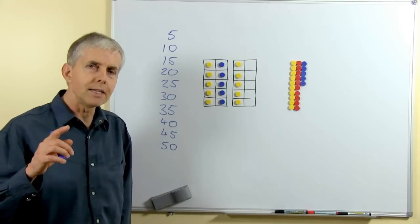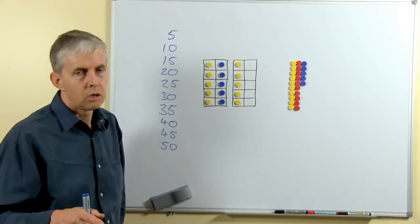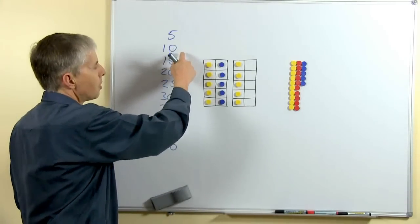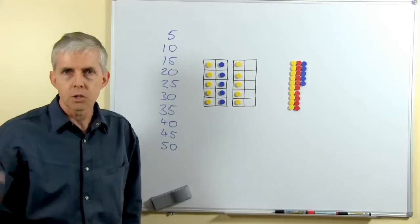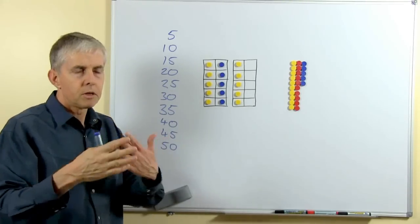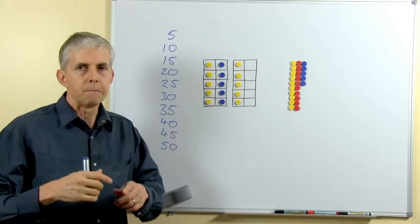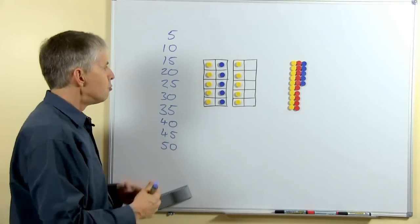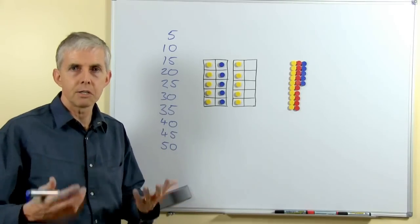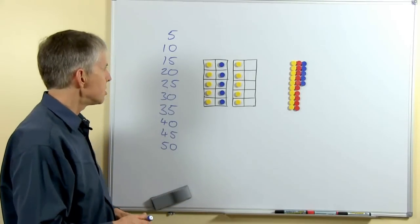But what no one told me as a child was the reason behind it. And of course the reason why it goes 5, 10, 15, 20 and then 25, 30, 35, 40 and so on in that repetitive sort of two part pattern, the reason for that is that five is half of ten and ten is the basis for our numeration system.